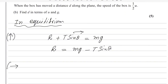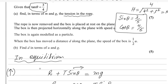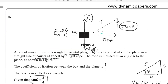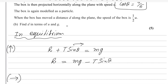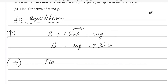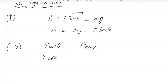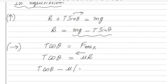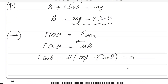Taking rightward as positive, the rightward force is T cos theta and the leftward force is the friction mu R. Setting them equal: T cos theta = mu R. Substituting R = mg − T sin theta, we get: T cos theta − mu(mg − T sin theta) = 0.